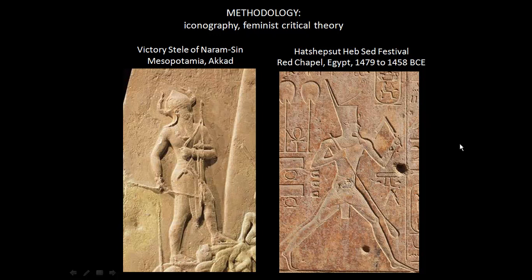We're going to do a comparison. We have the Victory Stele of Naram-Sin, which should be familiar — we looked at it during our formal analysis. We're comparing a detail of this Mesopotamian king to an image of an Egyptian pharaoh. Interestingly, this is actually a female pharaoh, one of three women who held that title in ancient Egypt. Hatshepsut was the longest-lasting female pharaoh, ruling for something like 20–25 years.